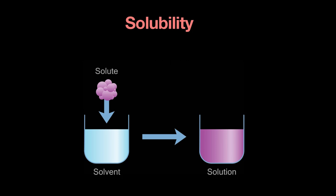Whether it's an ionic compound or covalent, when you dissolve a solute in water it dissolves to give you a solution. You have a solute which is what dissolves in the solvent — the solvent is always a liquid, mostly water. At times it could be oil or alcohols depending on whether you want a polar or non-polar solvent. Water and alcohol are polar solvents while oils, fats, and alkanes are non-polar solvents. In most cases in this chapter we'll be looking at ionic compounds dissolving in water.